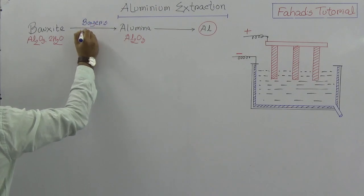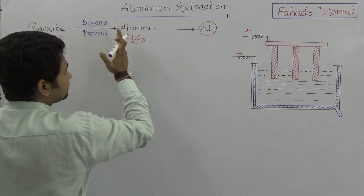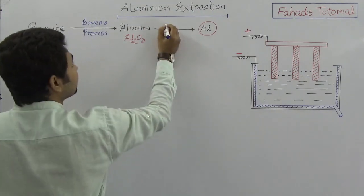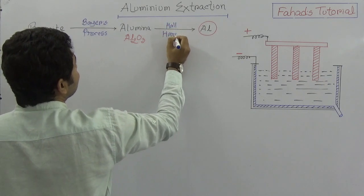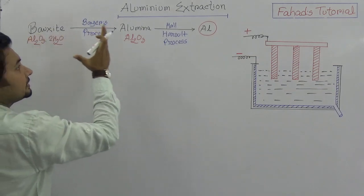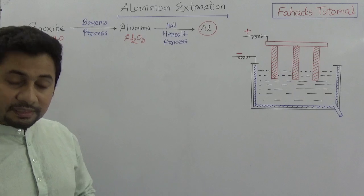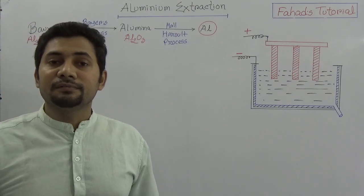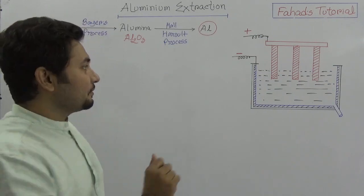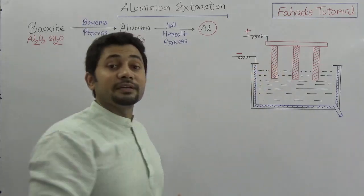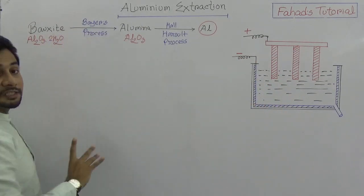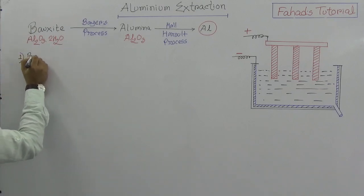The first process is the Bayer's process or Bayer's method, and the second process — from alumina to aluminium — is the Hall-Héroult process. So from bauxite we get alumina first, and from alumina to aluminium. I want those watching right now to concentrate, because this is important. I have drawn something related to electrolysis. Before explaining that, we need to understand the Bayer's process.